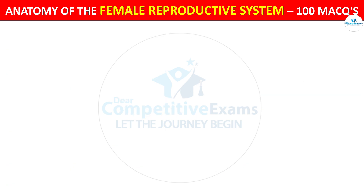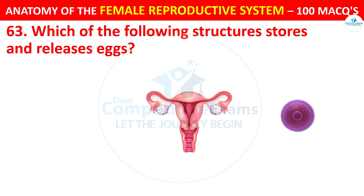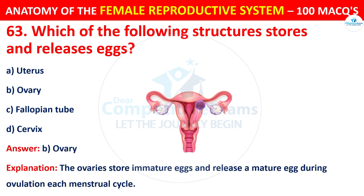Question number 63. Which of the following structures stores and releases eggs? The correct answer is B — the ovary. The ovaries store immature eggs and release a mature egg during ovulation each menstrual cycle.